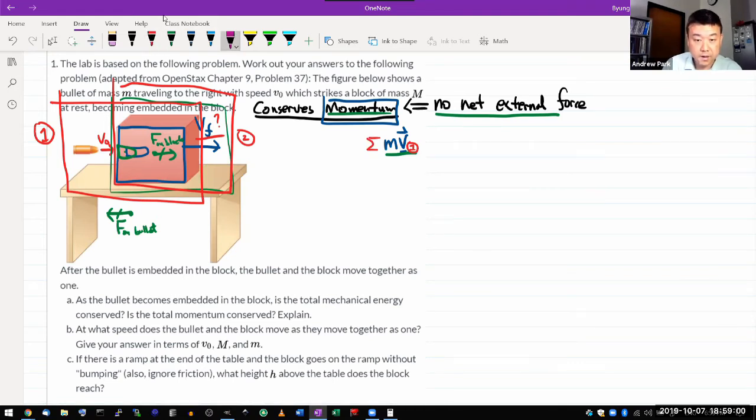So total momentum, and this is a one dimensional problem. Let me say this is my plus x and just deal with that. Total momentum in state one is equal to, so in snapshot one, only the bullet is moving. So the total momentum is going to be mass of the bullet times V naught.